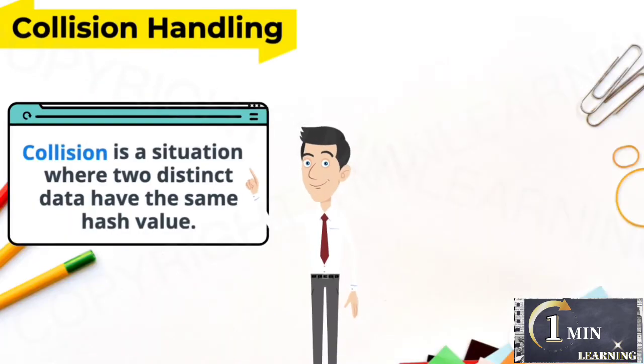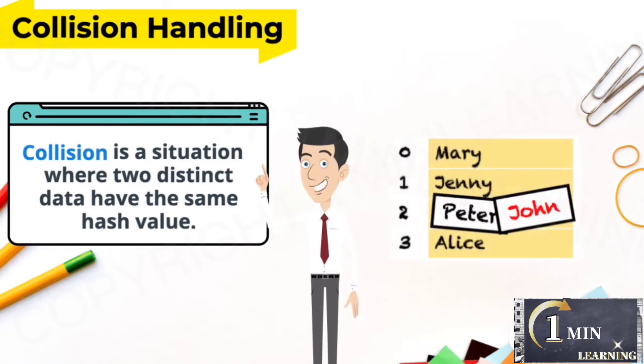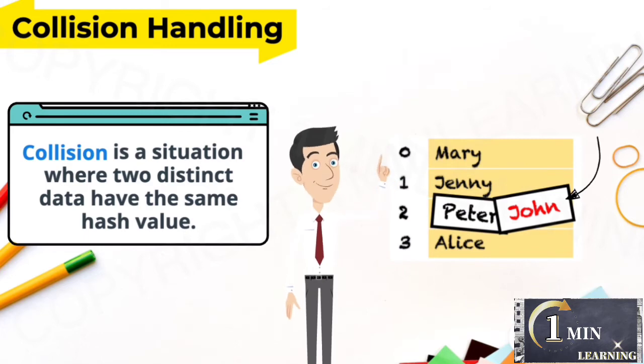There is a situation where two distinct data have the same hash value. This is called a collision. For example, inserting John at index 2 creates a collision.